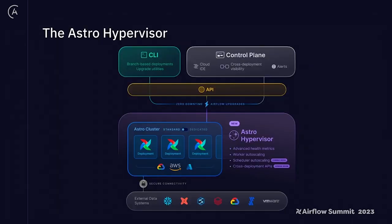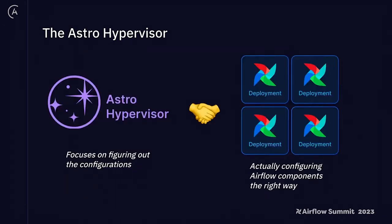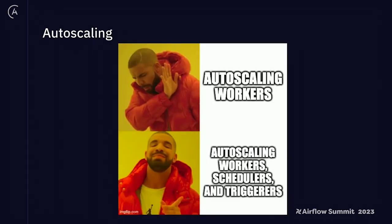So we built a solution for that, which we call the Astro Hypervisor. This is a core part of our Astronomer platform that we're rolling out now. What the Astro Hypervisor really does is manage all the configurations on top of Airflow so that people don't have to learn about Airflow system configurations. It's built on top of the Kubernetes operator, which deploys the right configuration to the right Airflow deployment. The right configuration is determined by the Astro Hypervisor, which looks at the load — the number of DAGs, the number of tasks running at a given time — based on deep observability of the Airflow deployment itself.